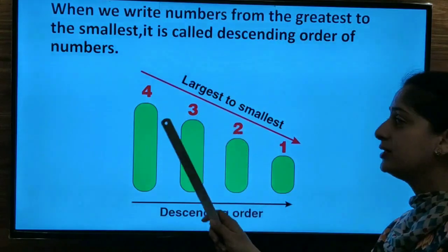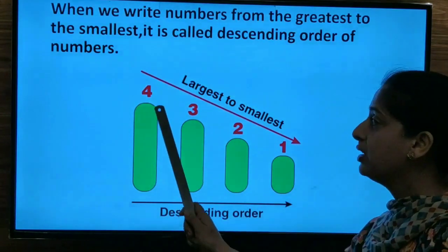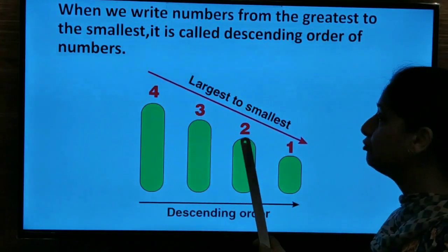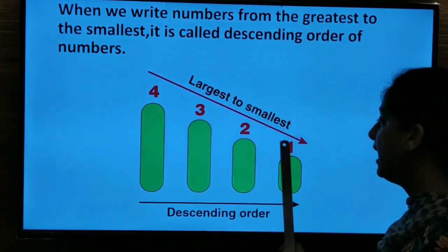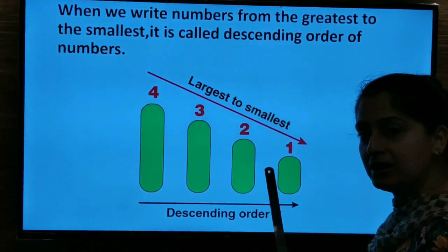Here we have given 4 numbers. 1, 2, 3, 4. Out of it, 4 is the largest. 3 is smaller than 4. 2 is again smaller than 3. And 1 is the smallest of all the numbers.